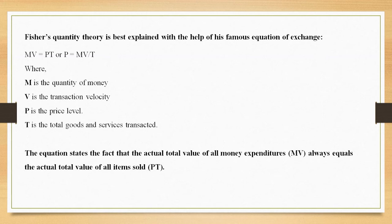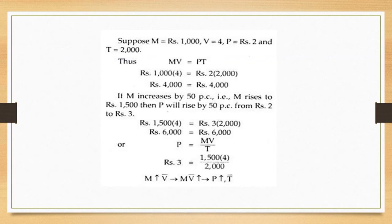Fisher's equation describes only the transaction value of money, not the store value. The equation states the fact that the actual total value of all money expenditure — MV — always equals the actual total value of items sold. Whatever money has been supplied equals whatever money has been spent over goods and services.